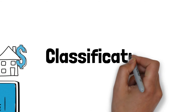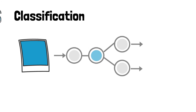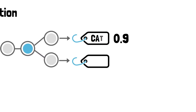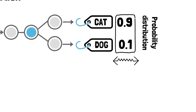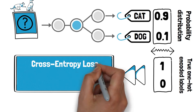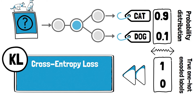Classification is a bit more complex. Here we are assigning data points to specific categories, and our model's output is essentially a probability distribution across these categories. For instance, in classifying an image as a cat or a dog, the model might output probabilities like 90% cat and 10% dog. To measure the difference between the predicted probabilities and the actual labels, we typically use the cross-entropy loss function. For reference, cross-entropy is related to KL divergence, which measures the difference between two probability distributions.